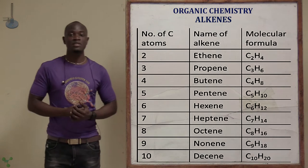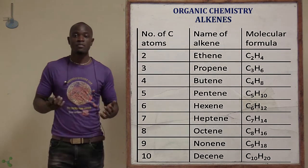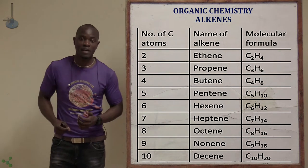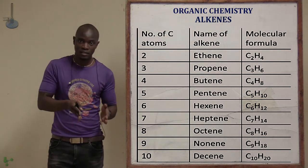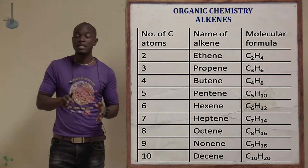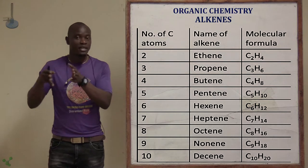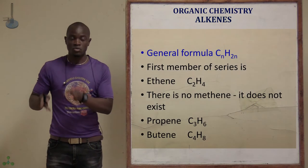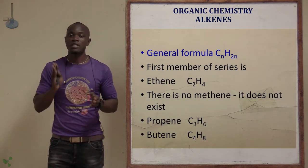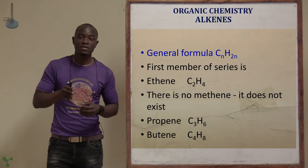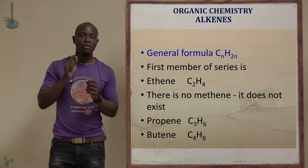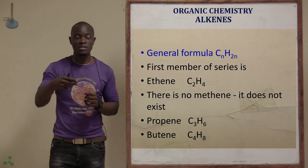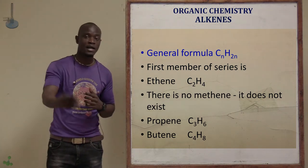For alkenes, they form a homologous series whereby the first member is ethene. The first member is not methene — there is no methene. The reason is that carbon should have two bonds bonding to another atom.